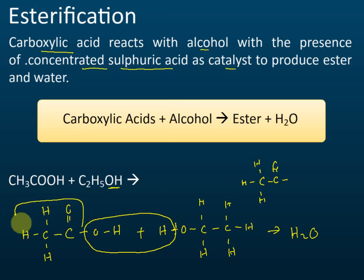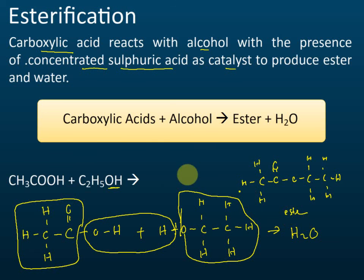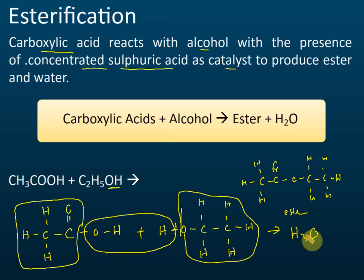So the ethanoate part combines with the ethyl part of the alcohol to form the ester. The ester formed has the ethanoate group joined to the two-carbon chain from ethanol. The H and OH combine to form water, leaving the two structures which join together to form the ester.